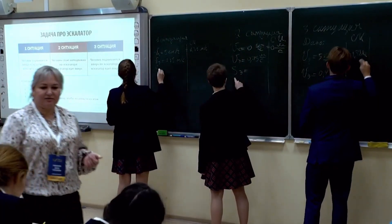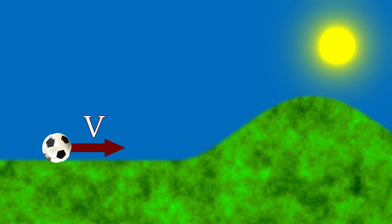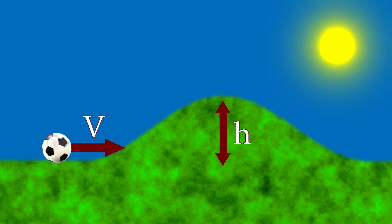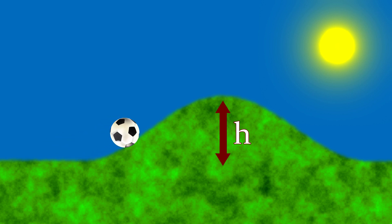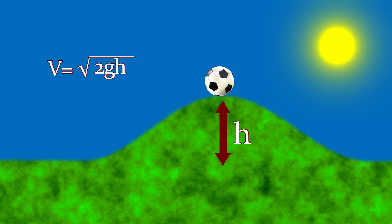To begin with, let's consider a very simple problem from school mechanics. Imagine we have a ball rolling in a straight line with a certain velocity v. Let's say there's a hill on the path of the ball with a height of h. The question is, will the ball be able to roll over the hill and end up on the other side, or will it roll back? If we neglect friction and other factors usually ignored in school mechanics problems, the solution is quite straightforward. For the ball to reach the top of the hill, its velocity must exceed a critical value, which in our highly simplified case can be calculated using this formula. For example, for a hill with a height of 5 meters, the ball's velocity must be at least 10 meters per second.